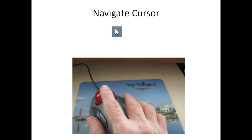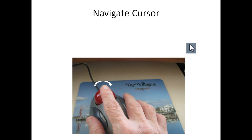Now how do you navigate a cursor with a ball mouse? What you do is you take your finger and you roll it to the right on the ball, and the cursor moves to the right. Then you roll it to the left, and it moves the cursor to the left.